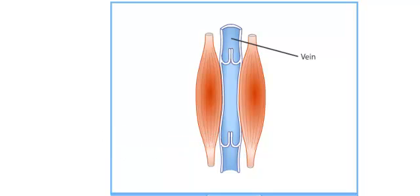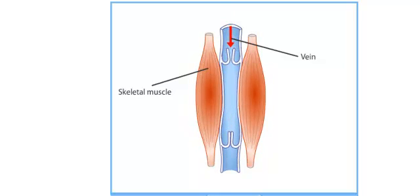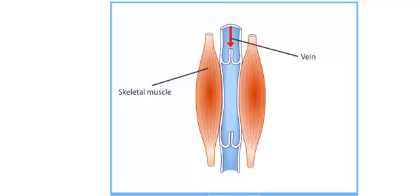The skeletal muscles next to the veins act as another pump — they force blood through the veins back towards the heart. As the muscles contract, they squeeze the vein and force blood through the valves. When the muscles relax and stop squeezing, there's no force to push blood up, so the blood wants to backflow. As it backflows, it closes the valves, keeping the blood from going back down. So as you continue to move and walk, contracting your skeletal muscles, they squeeze and force the blood up, and as they relax, the valves shut and hold it in place.